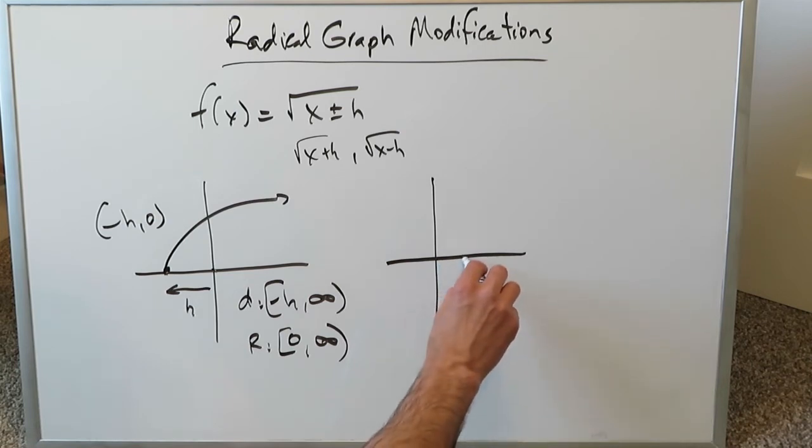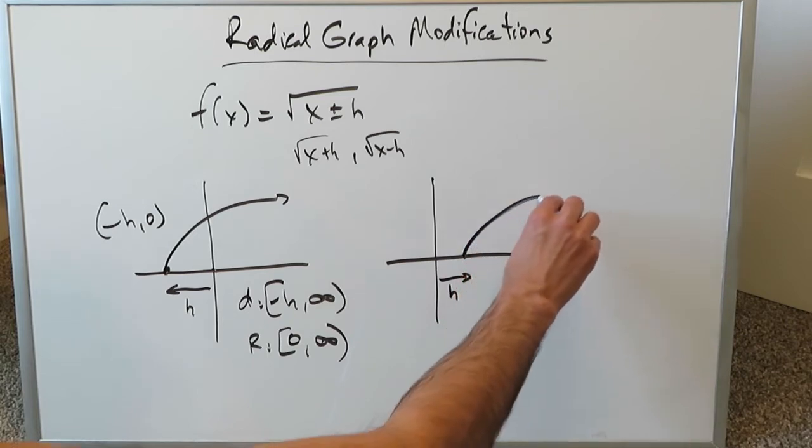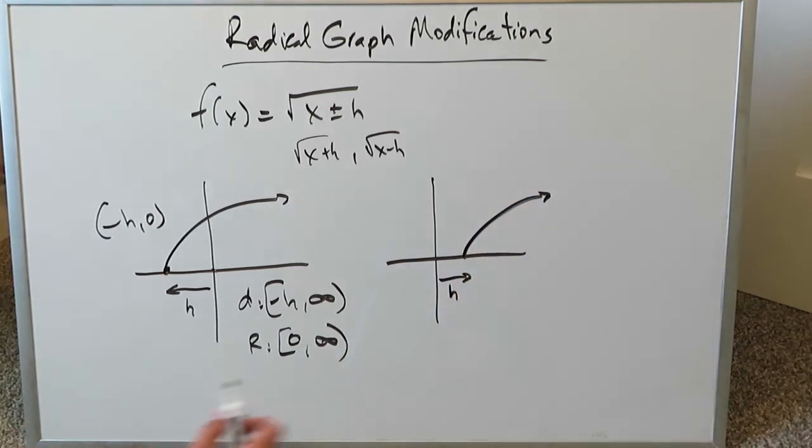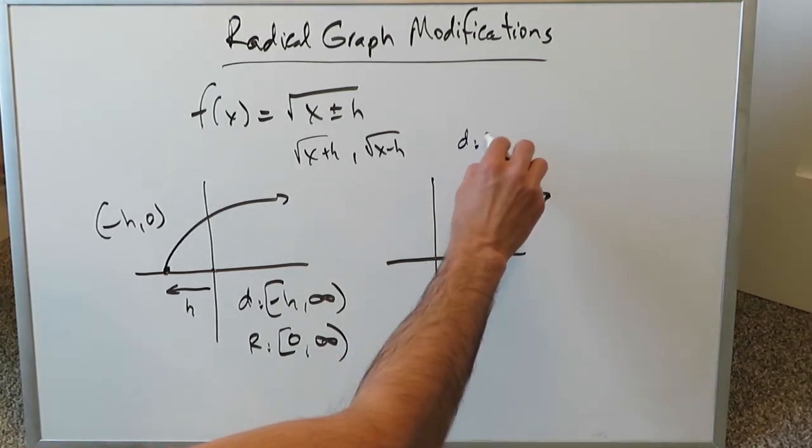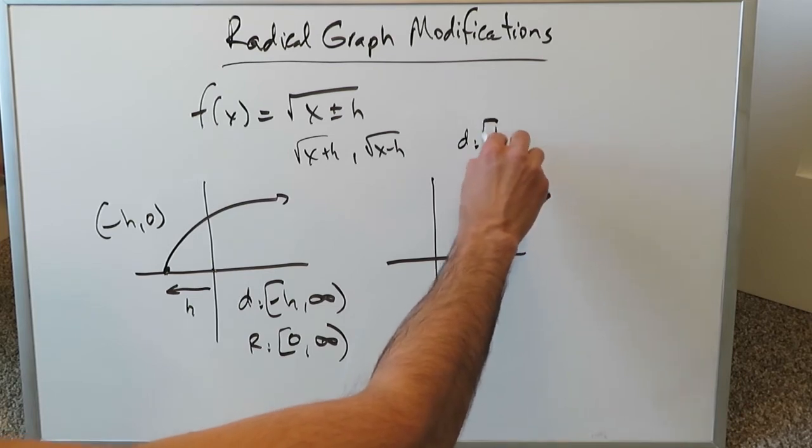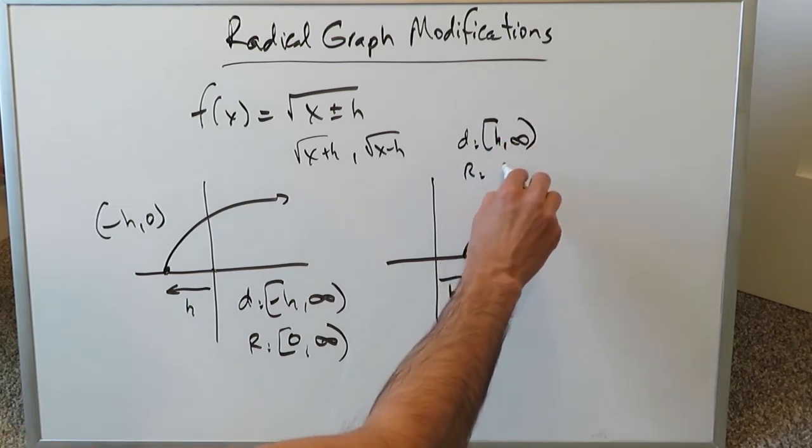When you're looking here at root x minus h, you've shifted that basic radical function but you've shifted it towards the right. Now we're looking at a graph that looks that way and the domain here is going to be h, comma, infinity including h. The range here is going to be 0, comma, infinity including 0.